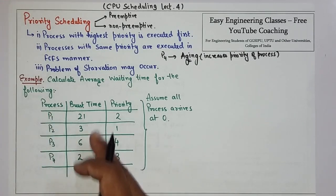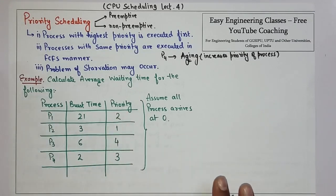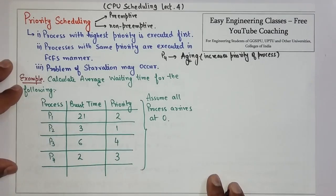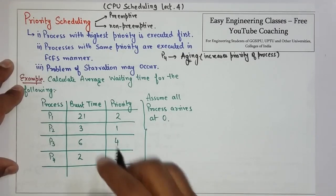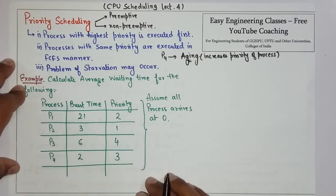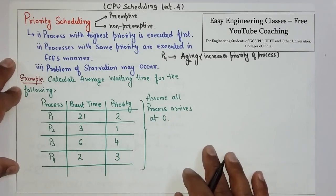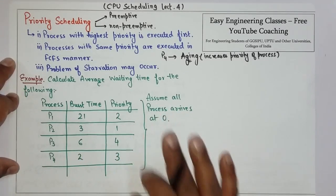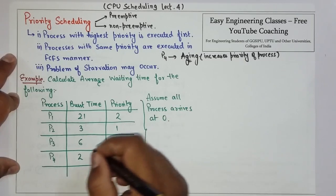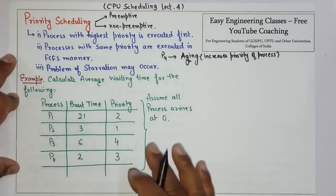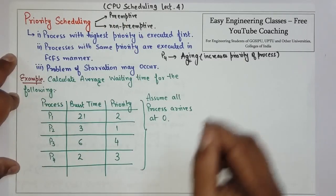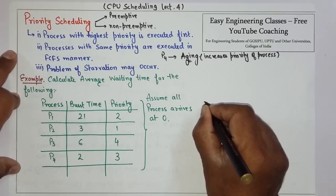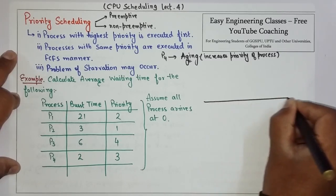Now we will solve a numerical example based on priority scheduling. We have a set of processes with their execution times and priorities. P2 will have the highest priority, and we are assuming all processes are arriving at 0 milliseconds. The question we are going to solve is based on non-preemptive priority scheduling. Let's draw the Gantt chart.